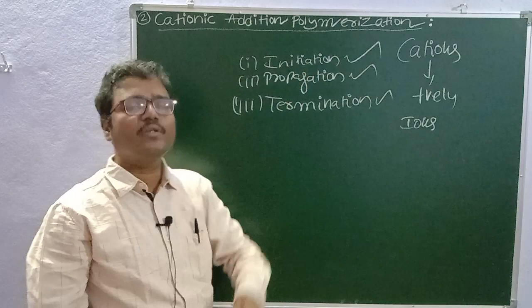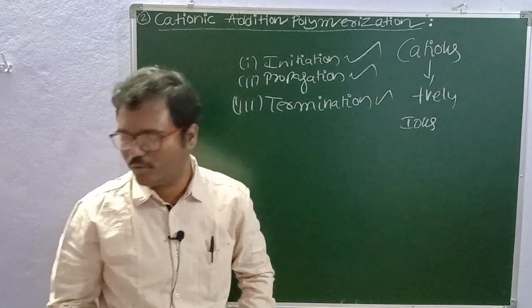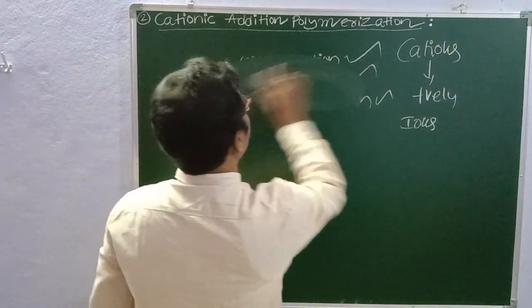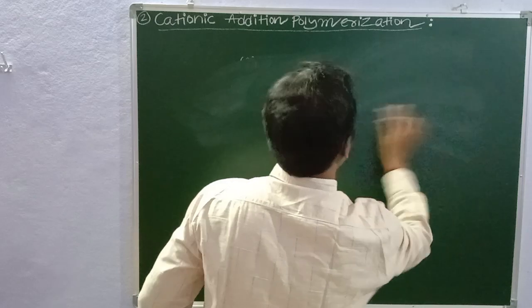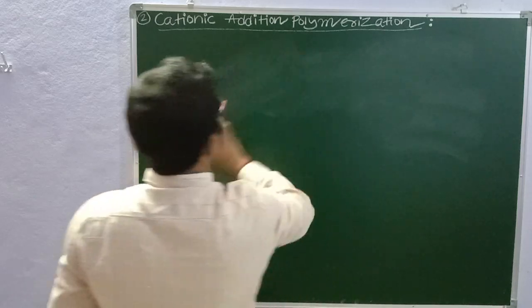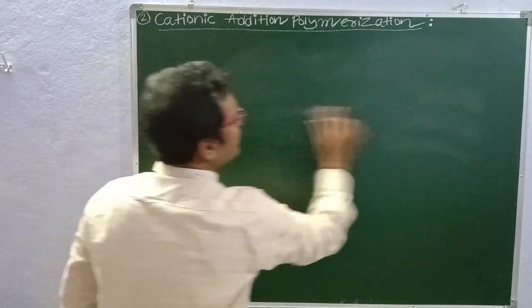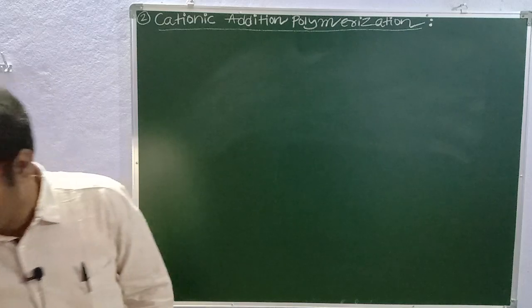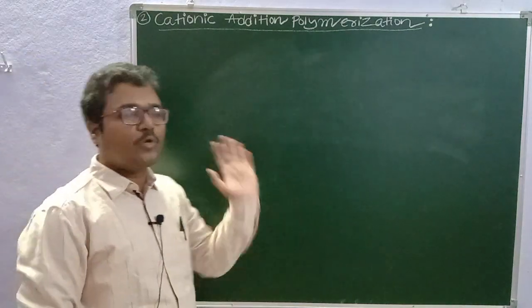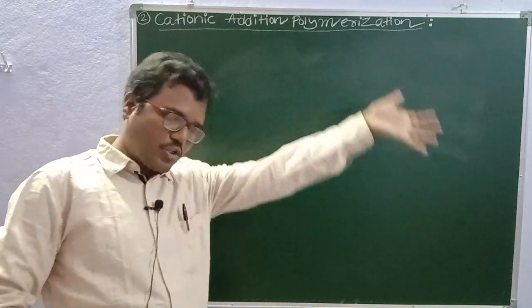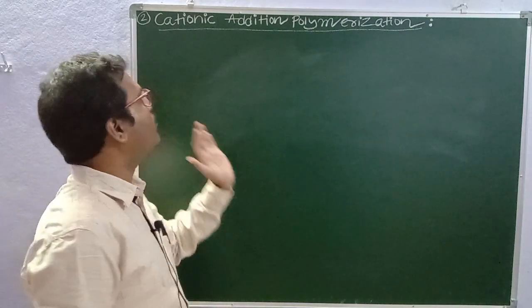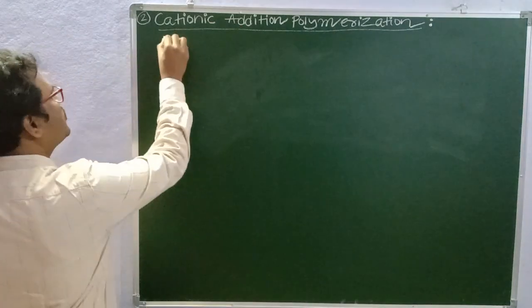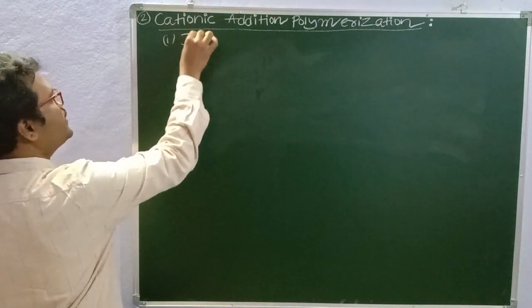Let us proceed into step number one, that is initiation. So in this polymerization, cations start the polymerization reaction — that means cationic addition polymerization. Step number one: initiation.